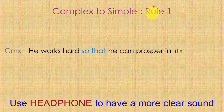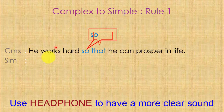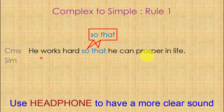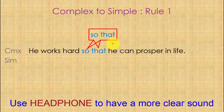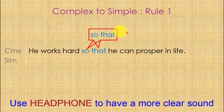Complex to simple, Rule 1. Look at this sentence: 'He works hard so that he can prosper in life.' This is a complex sentence and the conjunction here is 'so that.' I want to inform you that all the activities should be done in the subordinate clause.